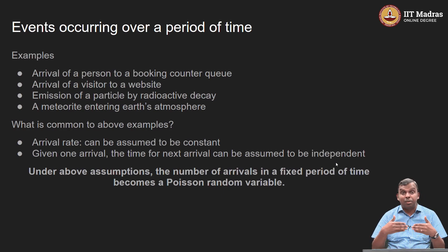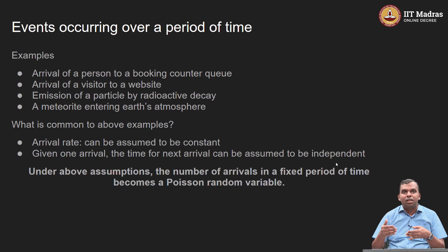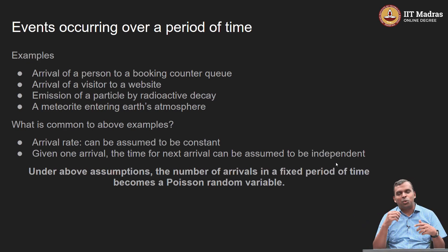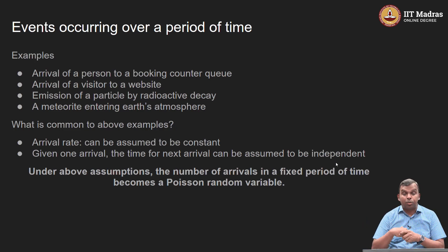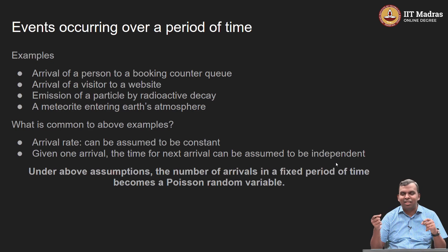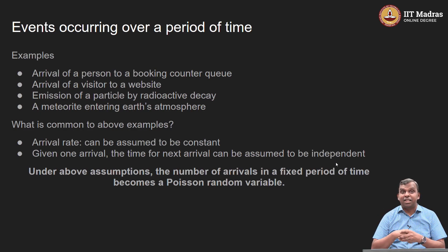A few more examples: you are running a website and you want to see when people come and access its content. Again, there is some randomness in the arrival — there are so many different people who can decide to check out your website on a particular day, and you do not know ahead of time who is going to come when. Another example is the emission of a particle by radioactive decay. There is a lot of randomness there; it is difficult to know exactly which particle is going to come off and at what rate.